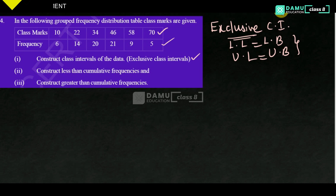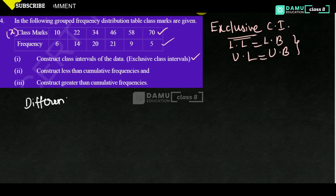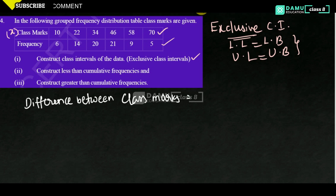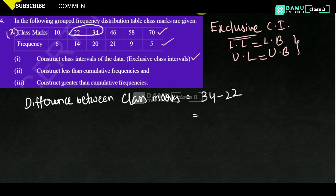Here, class marks will be taken as x. We have to use one formula: the difference between the class marks. So the difference between class marks — you can take 34 minus 22, or 22 minus 10, like that. Let's take 34 minus 22, so what we will get is 12.